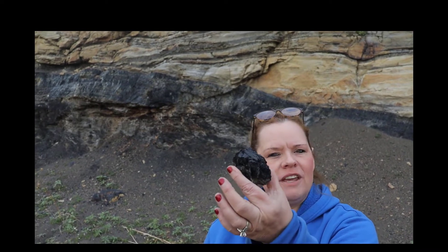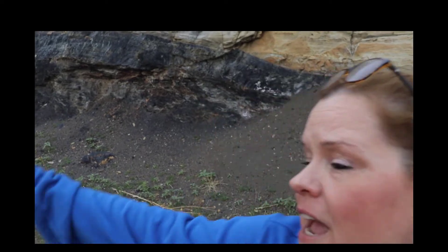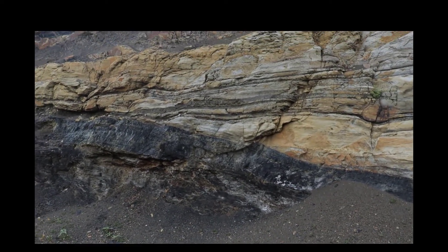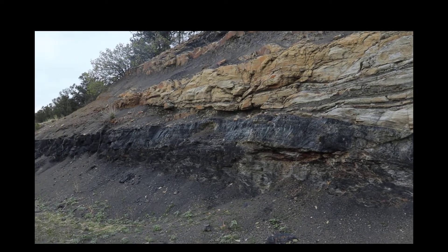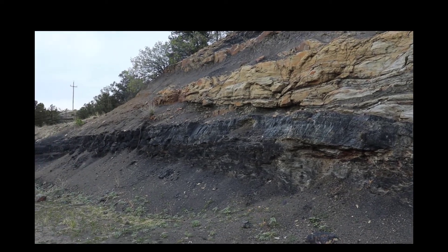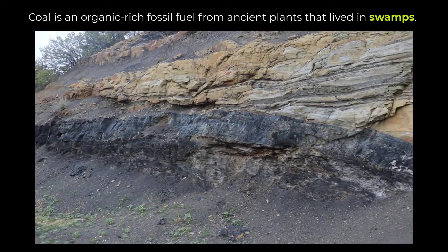We're at Trinidad State Park, and I want to point out some really cool things. I'm holding some coal — that is a fossil fuel — and I want to point out that you can see a seam of it here. Coal is mined from seams like this, and what does that represent?